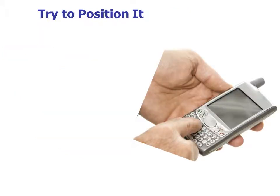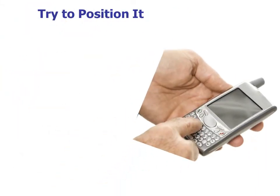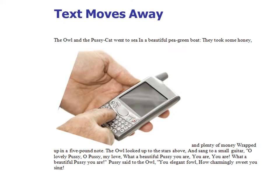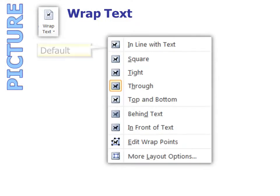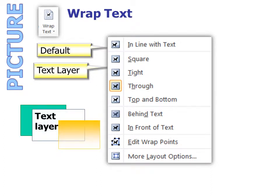So now there's no background. If you try to position it, it goes right back to where it started and the text moves away if you have text, and we don't want that. We use Wrap Text. Under Wrap Text, remember the default is In Line with Text, but we want to move it within the text layer. So this time we want to use the Tight option.